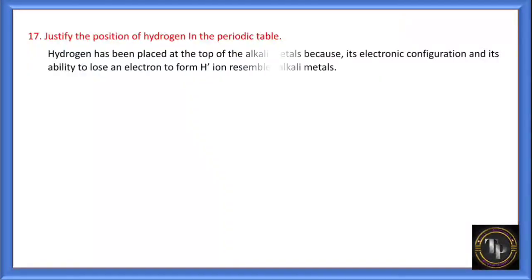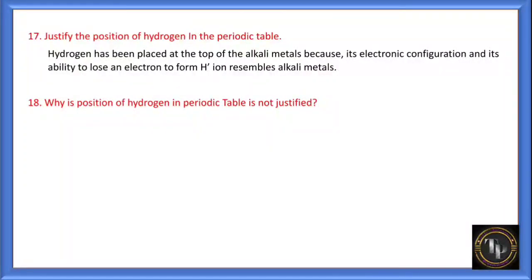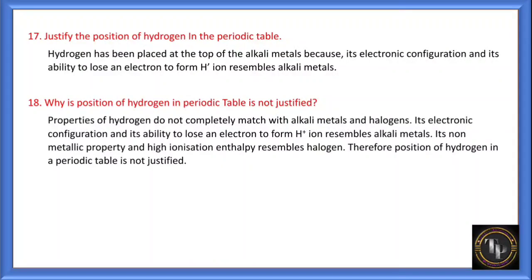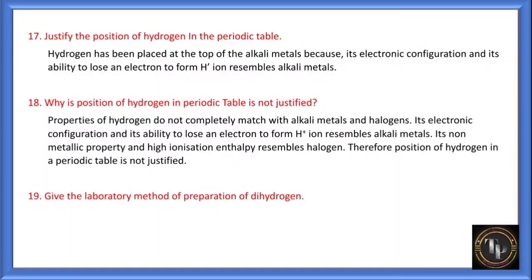Justify the position of hydrogen in the periodic table. Hydrogen is placed at the top of the alkali metals because its electronic configuration and ability to lose an electron to form H⁺ resembles alkali metals. However, its position is debatable because it can also act like halogens — it has non-metallic properties and high ionization enthalpy resembling halogens. Since its properties do not completely match either alkali metals or halogens, hydrogen is kept separately at the top of the periodic table.